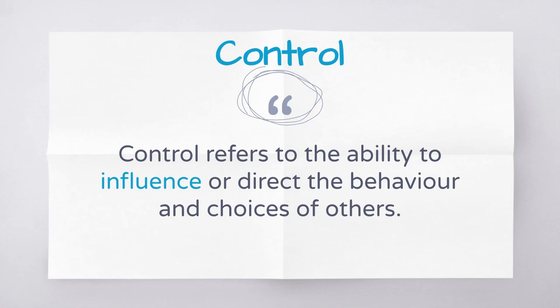In media, agency refers to the capacity for individuals or institutions to act independently and make free choices. If you have agency, you are making decisions for yourself without being influenced by anybody else and without necessarily having an impact on anybody else. Control is the reverse side of that coin — it refers to the ability to influence or direct the behaviour and choices of others. A really simple example: think about the ability to go to the bathroom. At home you have agency as to when you choose to go. In a school situation, the teacher has control over whether you use the bathroom — you have to ask permission.